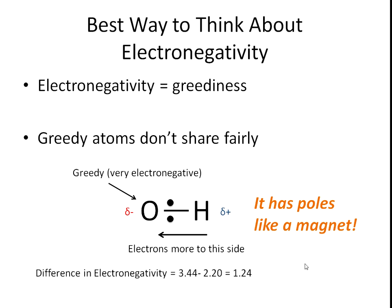For completeness, let's find the difference in electronegativity. This is atom 1 — we'll call it oxygen — which has an electronegativity of 3.44. Hydrogen is 2.2. So we get a difference of 1.24, which is between 0.4 and 2. So this bond is polar. It's very simple to do. Just remember that electronegativity is greediness and all this seems to fall out.